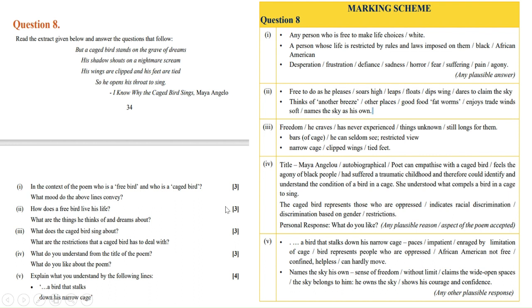What do you understand from the title of the poem? The title is 'I Know Why the Caged Bird Sings' by Maya Angelou. It's autobiographical. The poet can empathize with a caged bird because she feels the agony of black people, suffered a traumatic childhood, and therefore could identify and understand the condition of a bird in a cage. She understood what compels a bird in a cage to sing. A cage represents those who are oppressed, indicates racial discrimination, gender restrictions, any kind of discrimination.